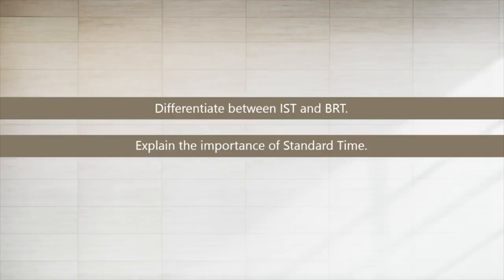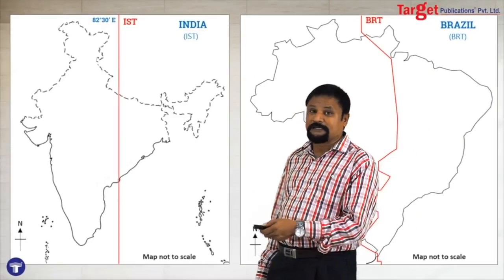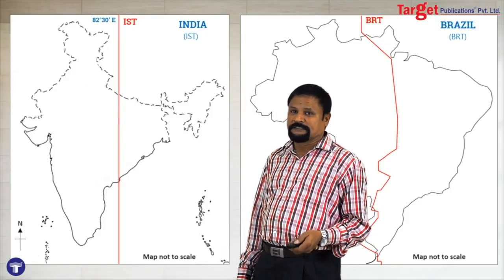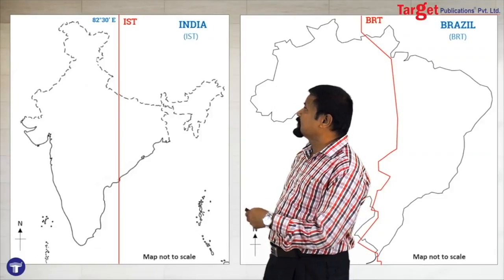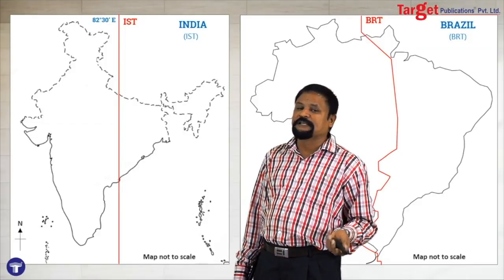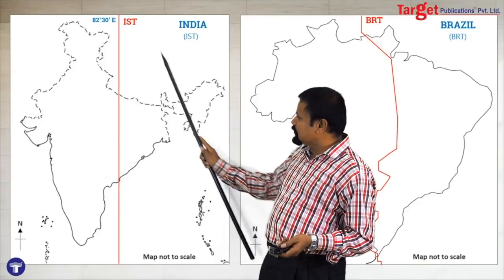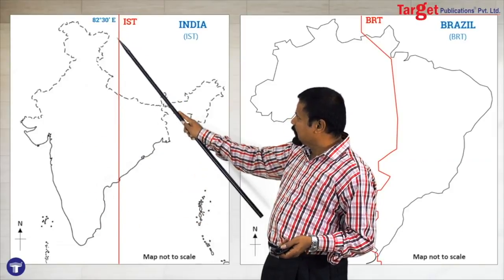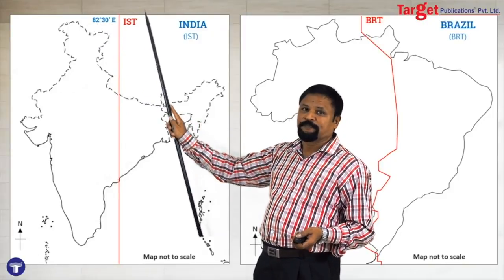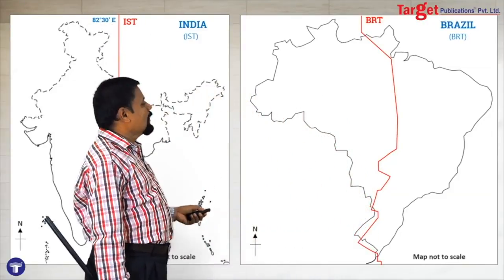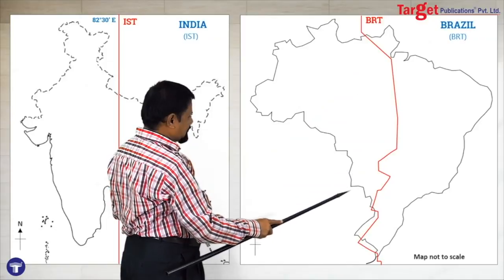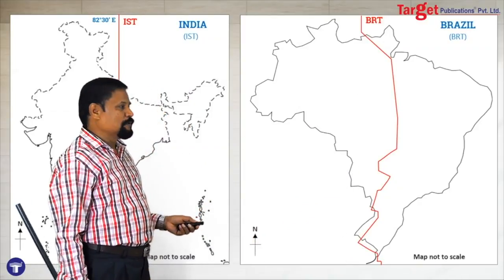There is a question about Indian Standard Time (IST) — or mark the Brazilian Standard Time (BST). For the question about the importance of Standard Time, or comparing Indian Standard Time and Brazilian Standard Time, draw the India stencil, mark the IST line at 82.5 degrees East, then draw the Brazil stencil and mark the Brazilian Standard Time meridian. Then write a comparative note.